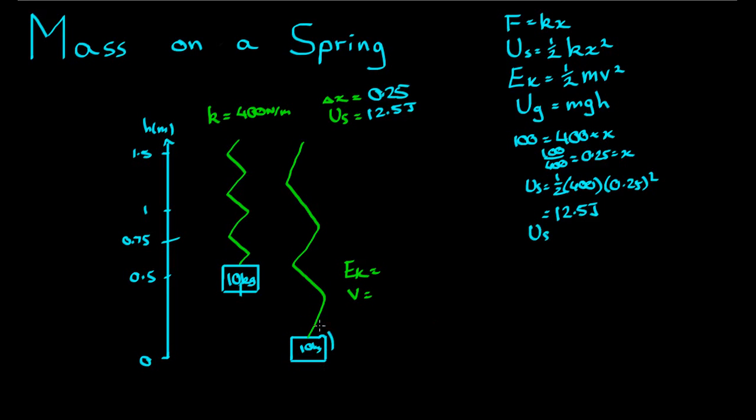So the spring potential at the very bottom here is equal to 1/2 k times x squared. That would be 0.75 squared. Since we're moving down from 0.75, the spring has been stretched from its natural length of 0.75 here to zero, which is equal to 0.5 times 400 times 0.75 squared, 112.5 joules. So the change in spring potential energy is the difference between this value here and this value here. That would be 100 joules.